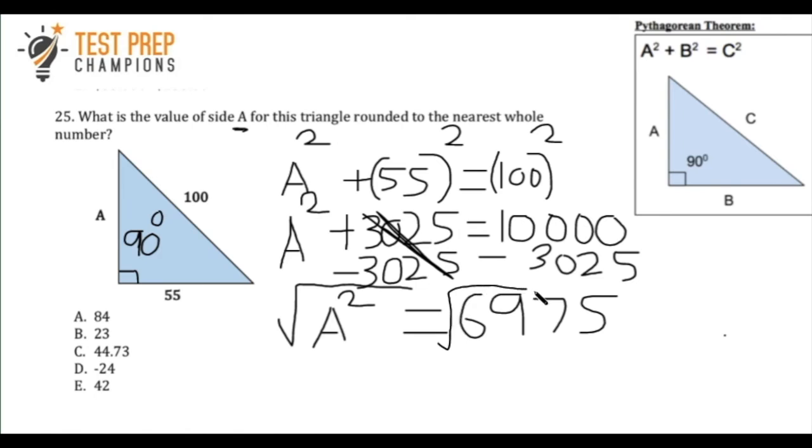What you really want to do is take the square root of both sides. We're doing that because the square root of A squared is just going to be A, which is what we really want. Now we have to take the square root of this big number, 6975, and what is it? So it's about 83.51.